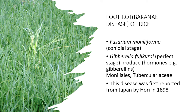There are two causal organisms — a conidial stage and a perfect stage. The perfect stage is called Fusarium moniliforme or Gibberella fujikuroi. This organism produces hormones like gibberellins, which induce this abnormal kind of growth in plants, so plants having this disease are abnormally grown and larger in stature.